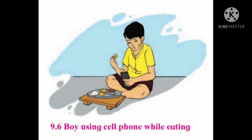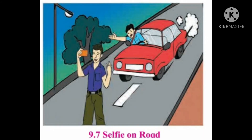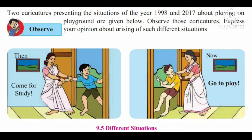Students, look at the picture. A boy is using the cell phone while eating — is it correct or wrong? Then, selfie on road. Nowadays, selfie fans are increasing and taking selfies on the road also has a bad and adverse effect on social health.